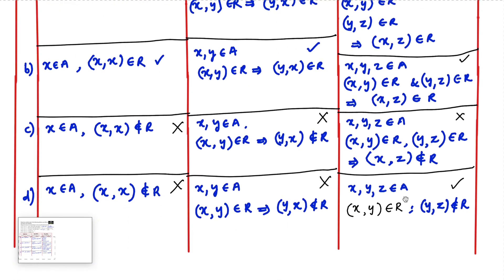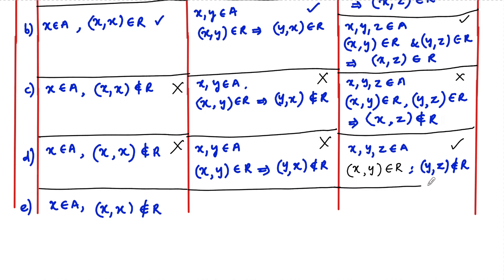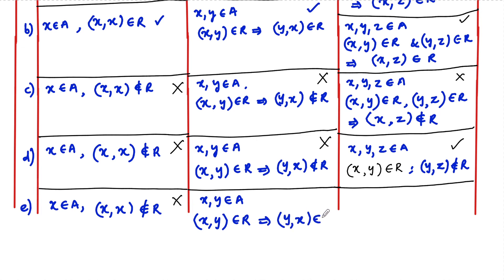Coming to the fifth one: r = {(x, y) such that x is father of y}. Suppose x belongs to A — a father cannot be a father of himself, so (x, x) does not belong to r, and hence it is not reflexive. For symmetric: if x is a father of y, this doesn't imply that y is a father of x — in fact, y can be a son or daughter of x. So (y, x) does not belong to r, and hence this relation is not symmetric.